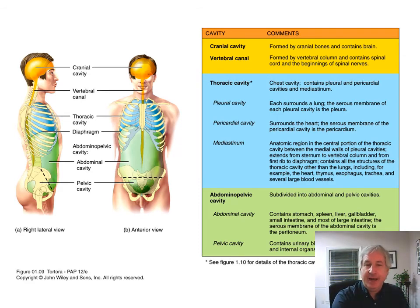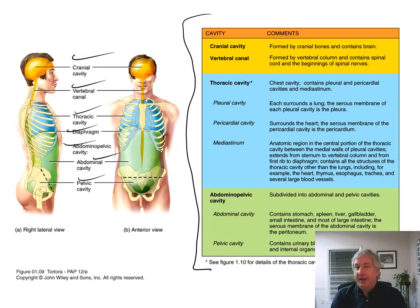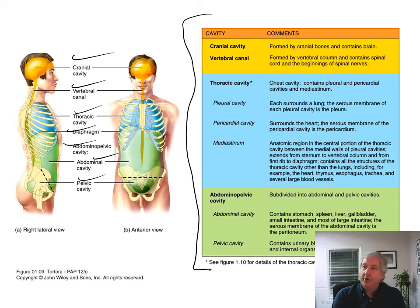Here's another slide showing the cranial cavity, vertebral canal or vertebral cavity, thoracic cavity, diaphragm, abdominal pelvic cavity, and connecting the abdominal cavity and pelvic cavity. There's a table defining all those and defining the organs that are in each one of those cavities. We're going to look at torso models in the lab showing all the organs in each one of these regions.